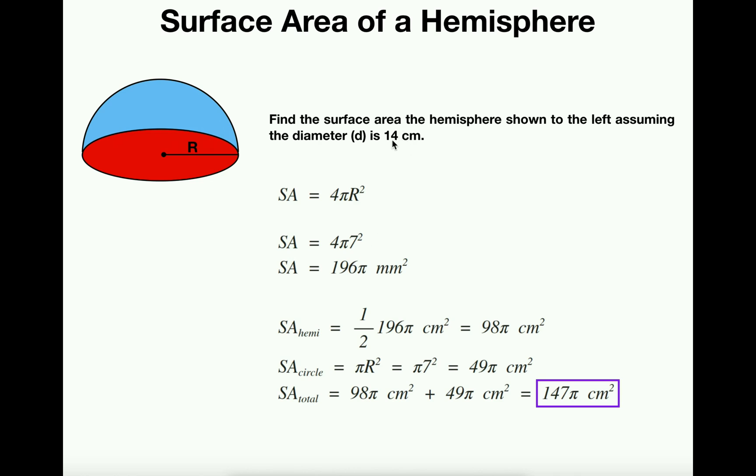Well, our radius is 7 centimeters because it's half the diameter. So the surface area would be 4π times 7². Now 7² is 49 times 4 is 196π. This should actually be centimeters squared. Sorry about that mistake. This is centimeters squared.